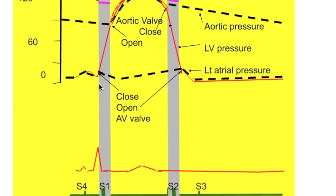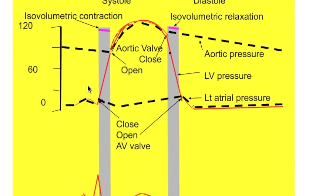The mitral and tricuspid valves close at the start of ventricular systole, or ventricular contraction, when ventricular pressure rises more than the atrial pressure. This red line indicates the ventricular pressure rising at ventricular systole. The aortic and pulmonary valves close at the end of the ventricular systole. So the AV valves close at the beginning of ventricular systole, and when the AV valves close, pressure in the ventricle rises.